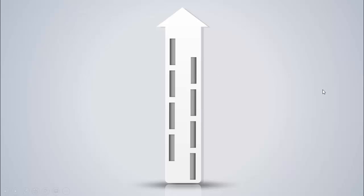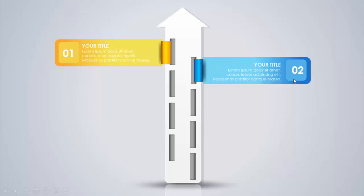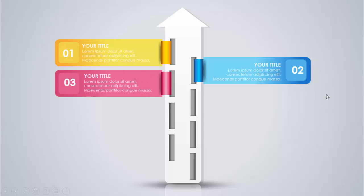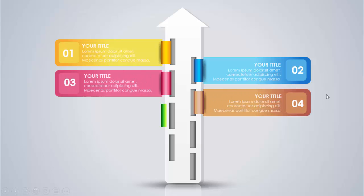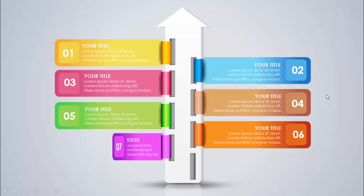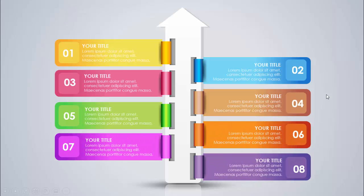When I click, you can see the first option comes with a shadow effect and gradient fill, with the option number, title, and detail text. On the next click, option two comes from the right side, then option three, option four, five, six, seven, and eight. I have created two slides — one with animation and another without animation — so depending on your requirement you can choose which slide you need.